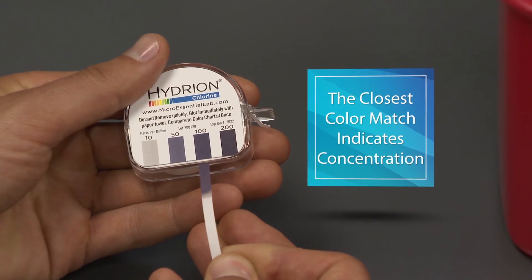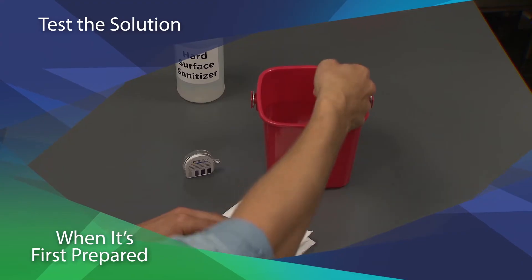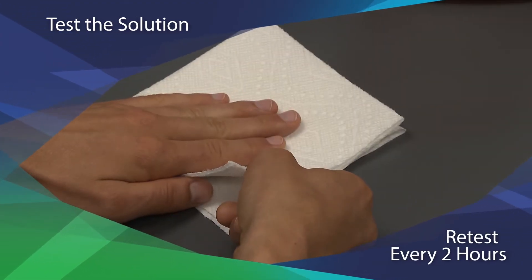The closest matching color indicates the free chlorine concentration. Test the solution when it's first prepared and retest it every 2 hours or so.